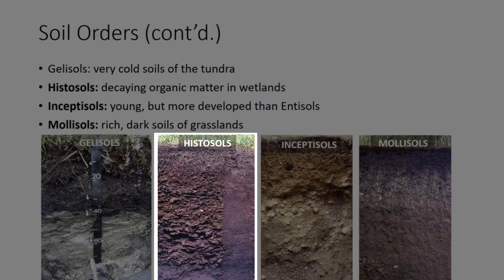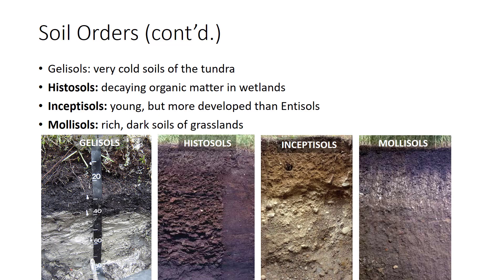Histosols form under decaying organic matter in wetlands. Hist means organic. The lack of oxygen slows decay, so organic materials accumulate, reaching contents greater than 20–30%. These materials are often called peats and mucks. Histosols can be drained for growing certain crops but suffer from subsidence or even fire. Like Gelisols, Histosols function as large carbon sinks.